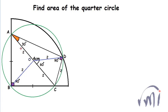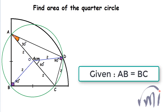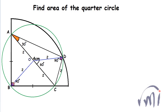Triangle ABC is also an isosceles triangle and at the same time a right-angle triangle where angle B equals 90 degrees. So the length BC equals length BA, and both equal 2√2.